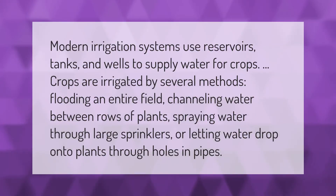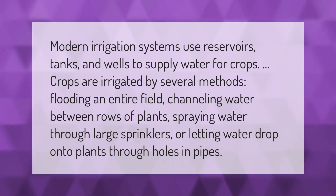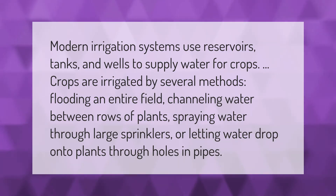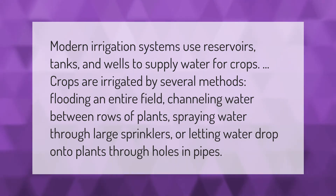Modern irrigation systems use reservoirs, tanks, and wells to supply water for crops. Crops are irrigated by several methods: flooding an entire field, channeling water between rows of plants, spraying water through large sprinklers, or letting water drop onto plants through holes in pipes.